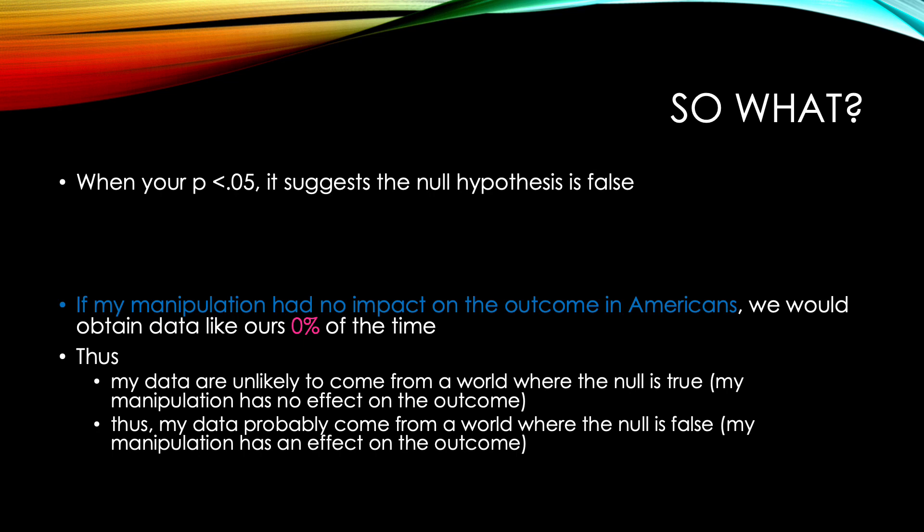That's what we do — that's what it means. When your p is less than 0.05, you're saying there is an effect in the population.